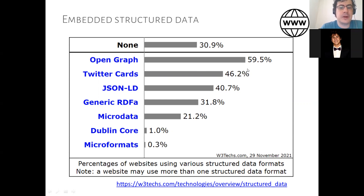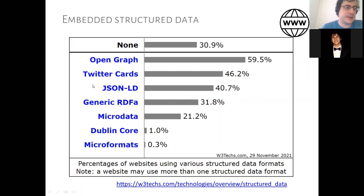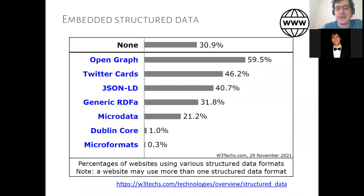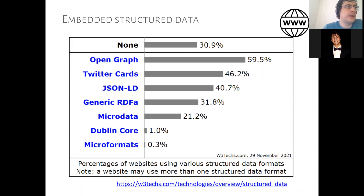Twitter Cards is something similar to Open Graph — essentially what Twitter wants you to put in to have a nice-looking preview of your web page when someone posts a link on Twitter. JSON-LD — JSON Linked Data — is essentially an RDF standard, a JSON syntax where you can specify a context which describes how to export that JSON data into RDF. RDF-A is a syntax of RDF that we can embed into web pages, used in about 32% of websites. Microdata is another way of embedding data into HTML — not really RDF as such, but it can be trivially converted to RDF.